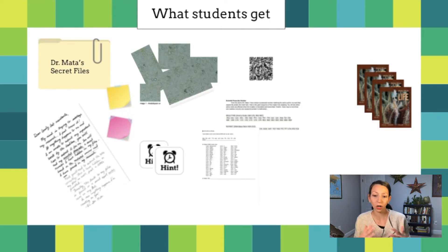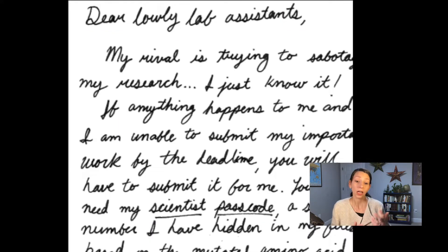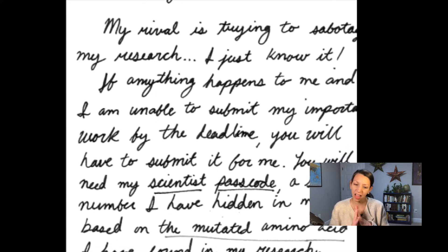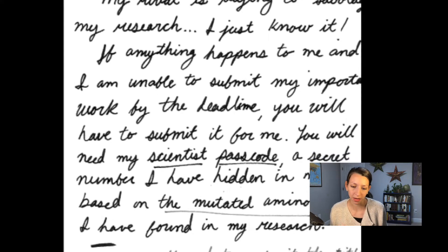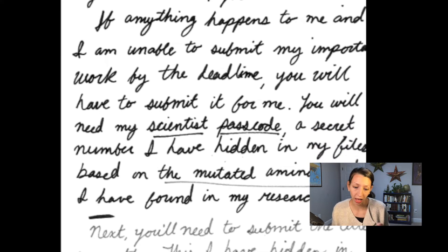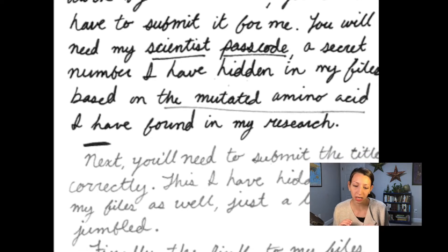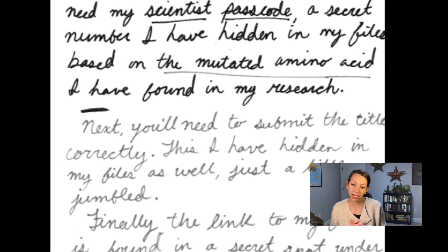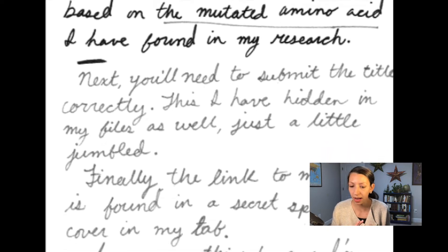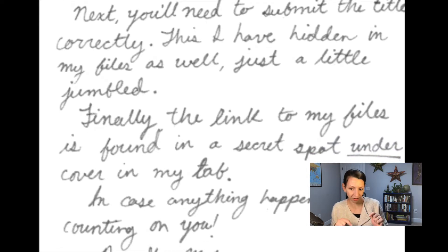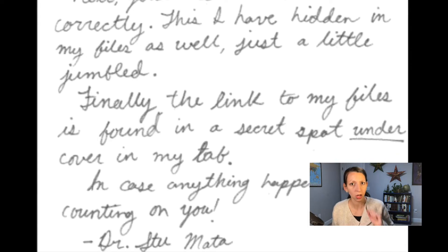There are no directions on where to start or which activities are most important — it's up to students to figure out what to do first. Dr. Mata's letter reads: 'Dear Lowly Lab Assistants, my rival is trying to sabotage my research. If anything happens to me, or if I'm unable to submit my important work by the deadline, you will have to submit it for me. You will need my scientist passcode — a secret number I have hidden in my files based on the mutated amino acid I have found in my research. Next, you'll need to submit the title correctly, hidden in my files just a little jumbled. Finally, the link to my files is found in a secret spot undercover in my lab. I'm counting on you, Dr. Mata.'